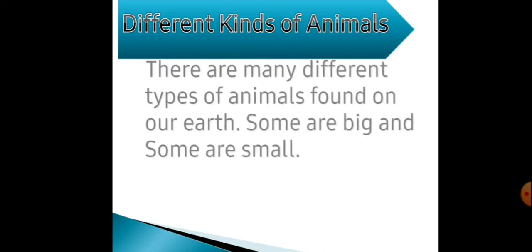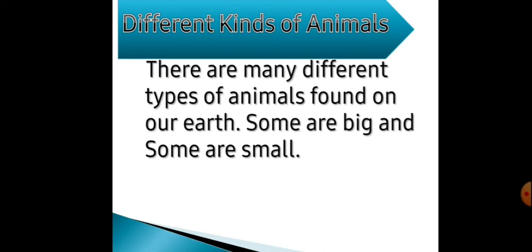Our first topic is different kinds of animals. Animals jo hote hain, woh different different type ke hote hain. There are many different types of animals found on our earth. Some are big and some are small. Hamare poori duniya mein bahut sare different different types ke animals hote hain, un mein se koi chote hote hain, koi bade hote hain.